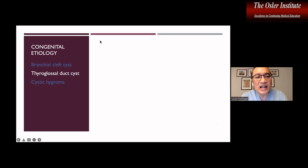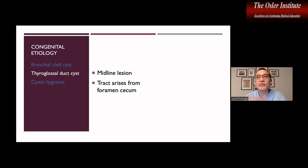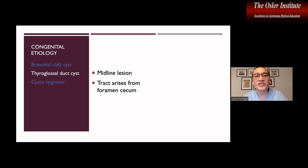The second congenital etiology is thyroglossal duct cyst, and as with the branchial cleft cyst, it can also have an adult manifestation without necessarily having a pediatric manifestation. Both of these cysts typically present in a pediatric patient as a cyst, but they can present without any pediatric manifestation and then have an adult manifestation later.